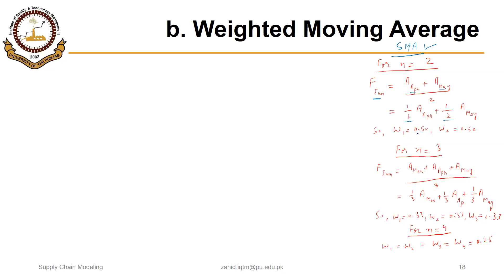So weight for April and May was 0.50 each. Similarly, if we used n=3, the forecast for June would equal actual demand for March plus April plus May divided by 3, assigning weight of 1/3 (0.33) to each of the three periods. If n=4, weight would be 0.25 for each of the four months, and if n=5, that would be 0.20 for all five months. But what if we want to assign a different weight to different months?